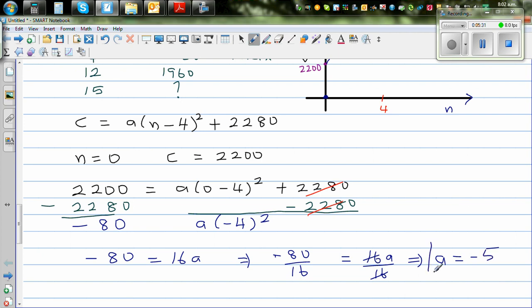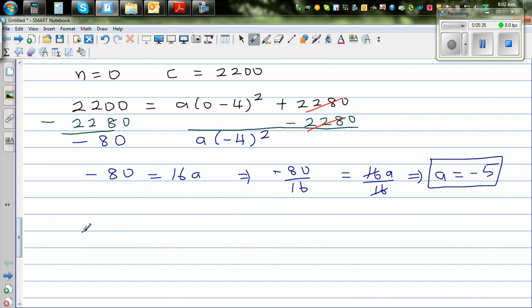So the equation is C equals minus 5 times (N minus 4) squared plus 2280.